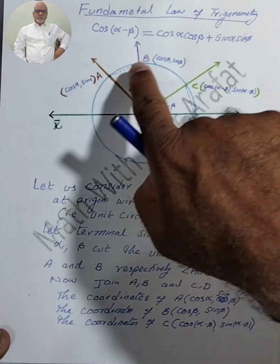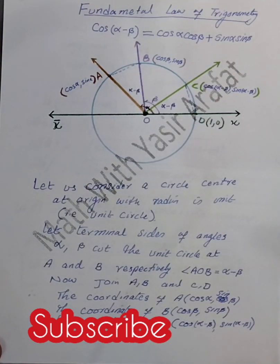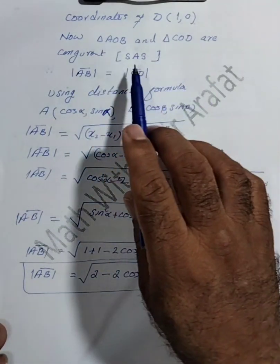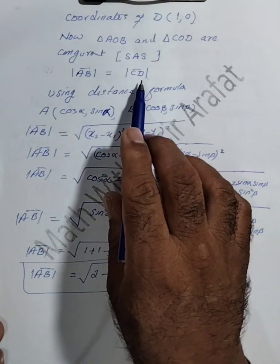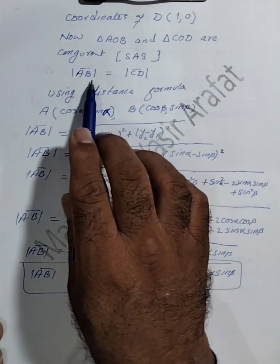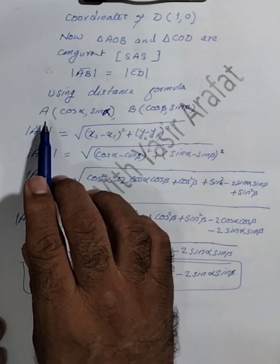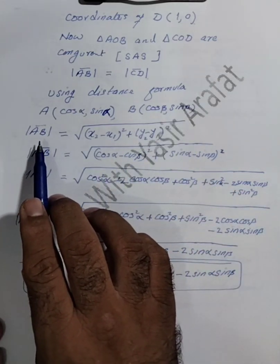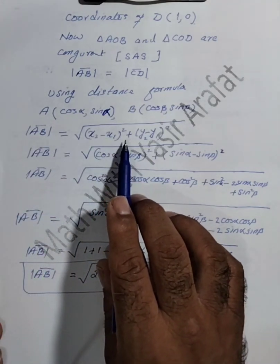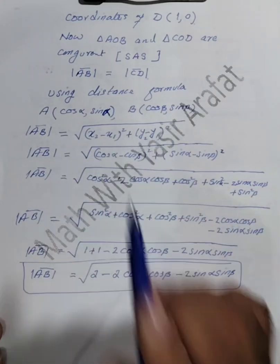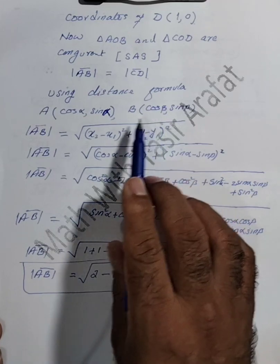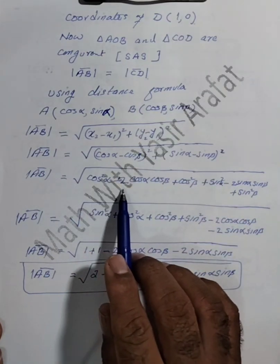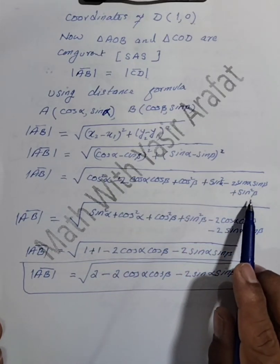Therefore we can say AB = CD. Now using the distance formula to find AB: coordinates of A are (cos α, sin α) and coordinates of B are (cos β, sin β). Applying the distance formula: AB² = (cos α - cos β)² + (sin α - sin β)². Expanding using (a - b)² = a² - 2ab + b².